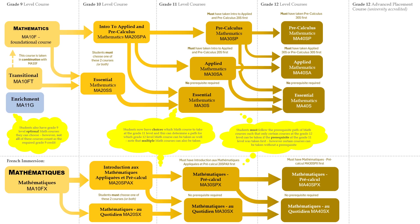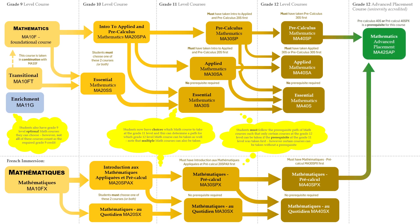Students must follow the prerequisite path of math courses such that only certain courses at the Grade 12 level can be taken if the prerequisite at the Grade 11 level was taken first. However, certain courses can be taken without a prerequisite. The Advanced Placement Mathematics course is also an option for students in Grade 12.